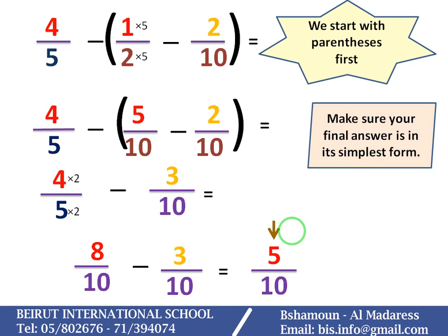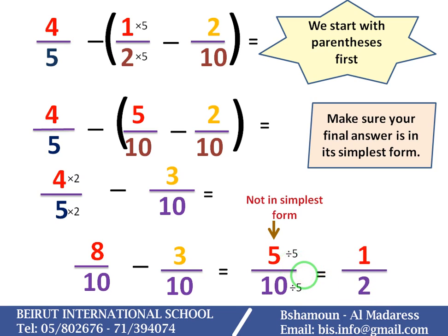Here my fraction is not in simplest form. 5 and 10 have a common factor, which is 5, so I can divide by 5, which is equal to 1 over 2. Now my answer is in simplest form. Thanks for watching.